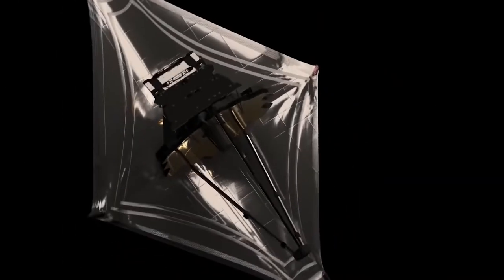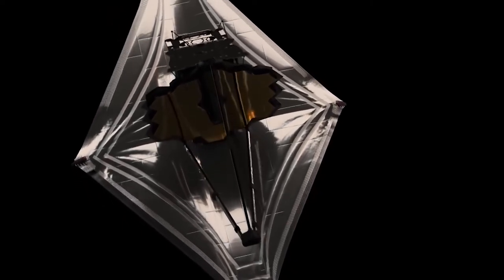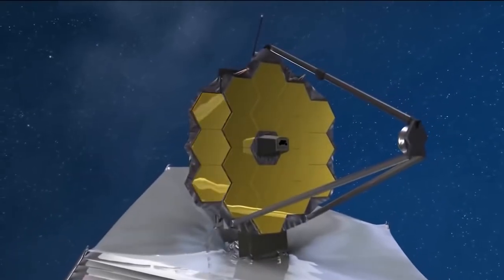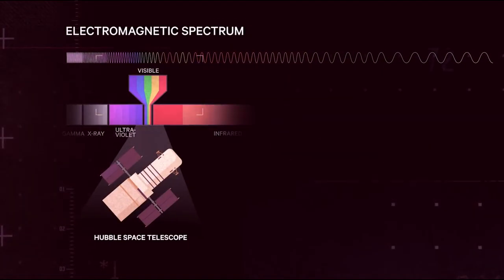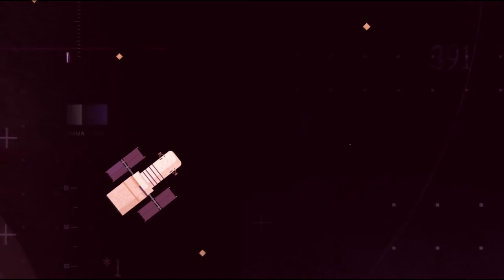But to detect the faint, far away targets scientists are after, JWST has to be away from the Earth's warm atmosphere. The problem is that Hubble is actually quite warm. Hubble is in Earth's low orbit, and it's about the same temperature as the Earth.